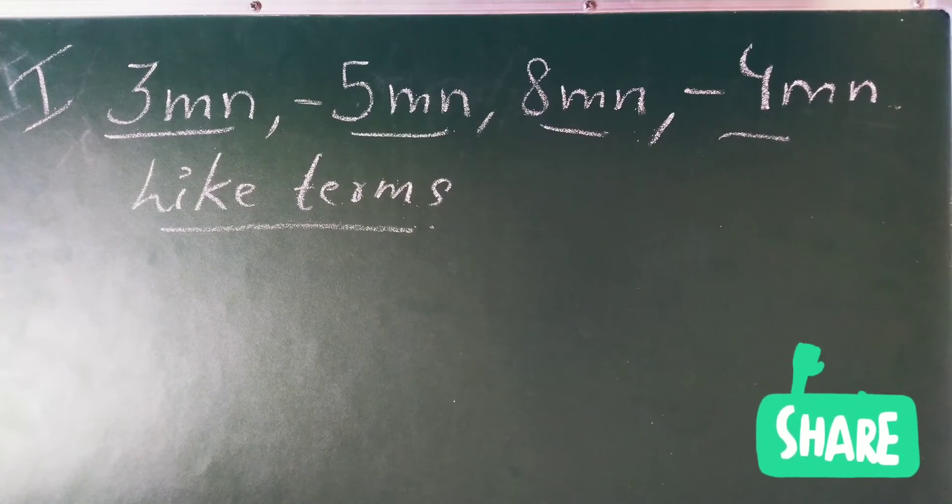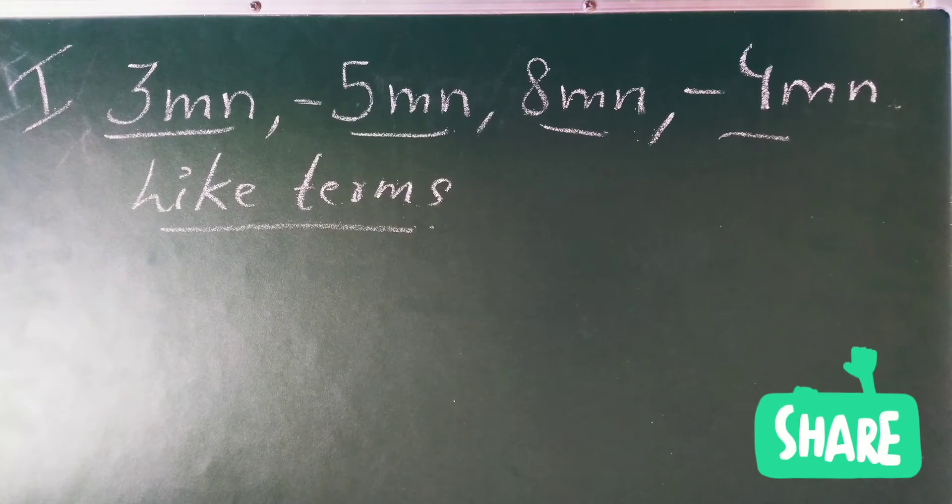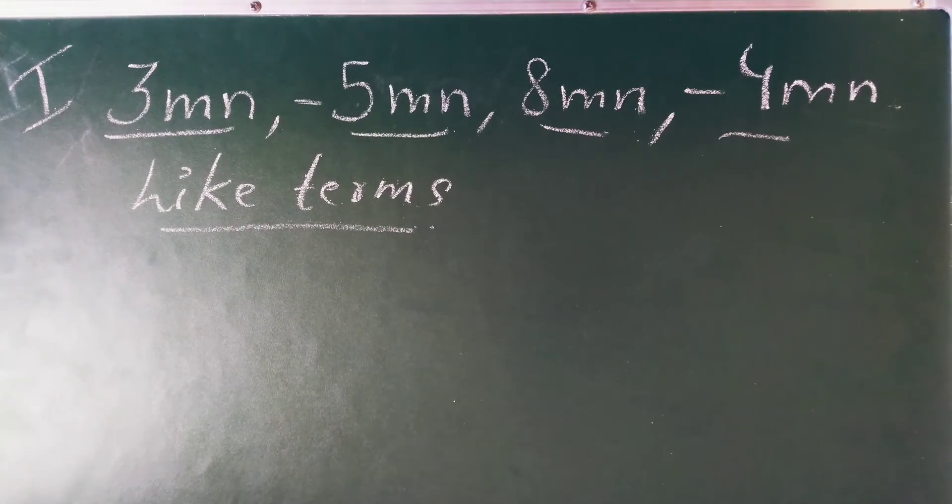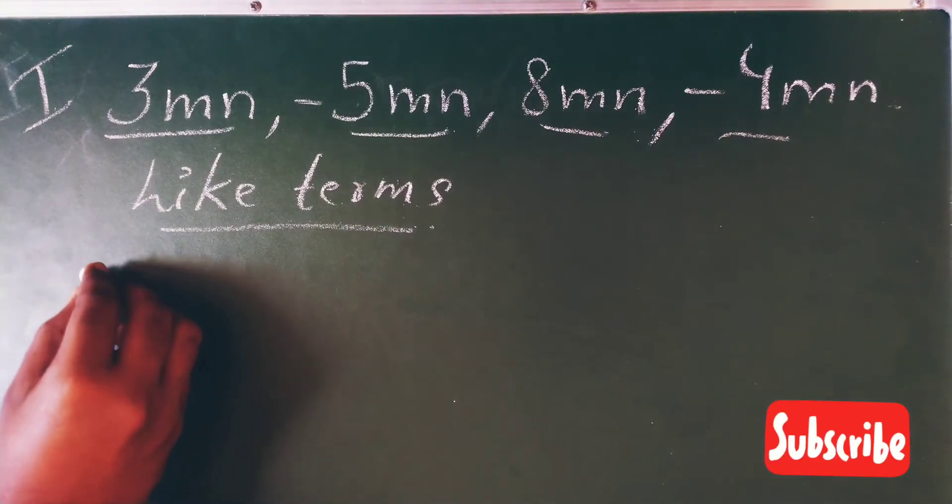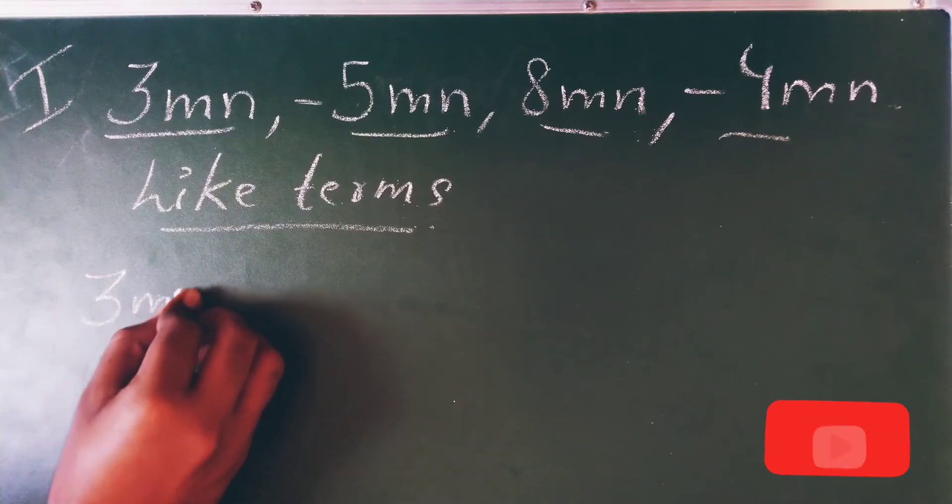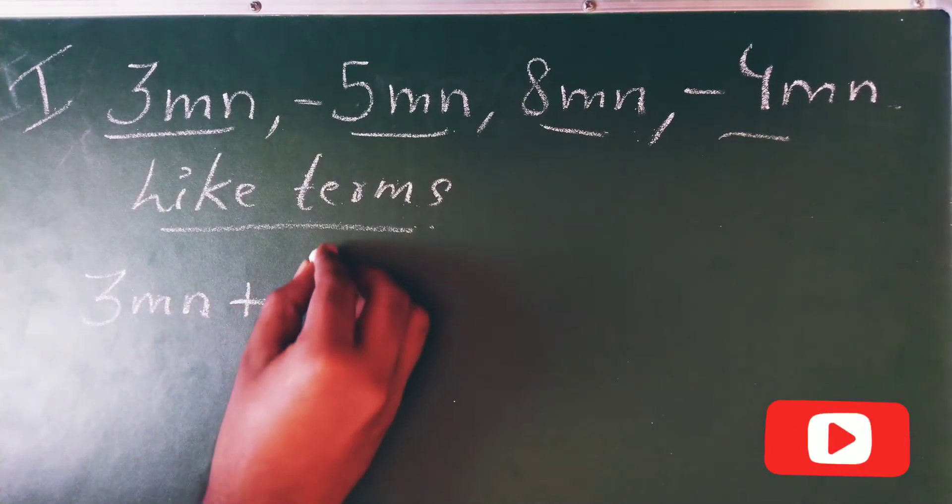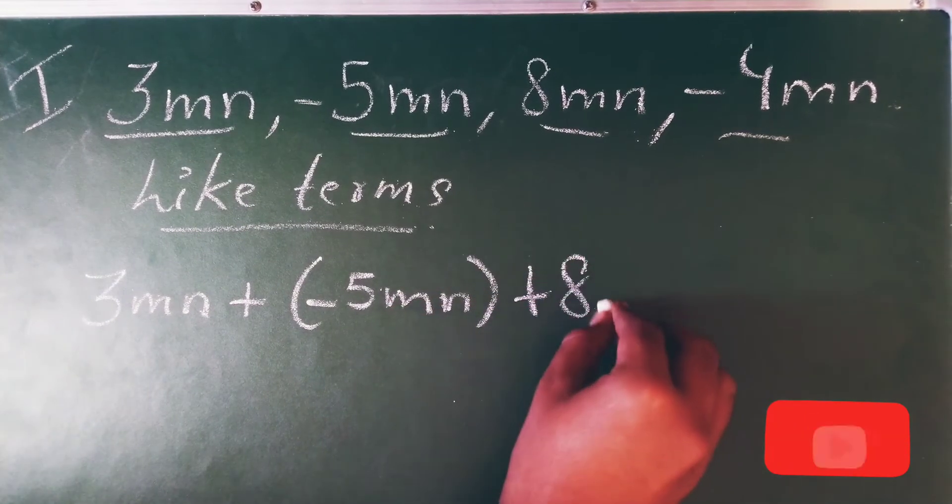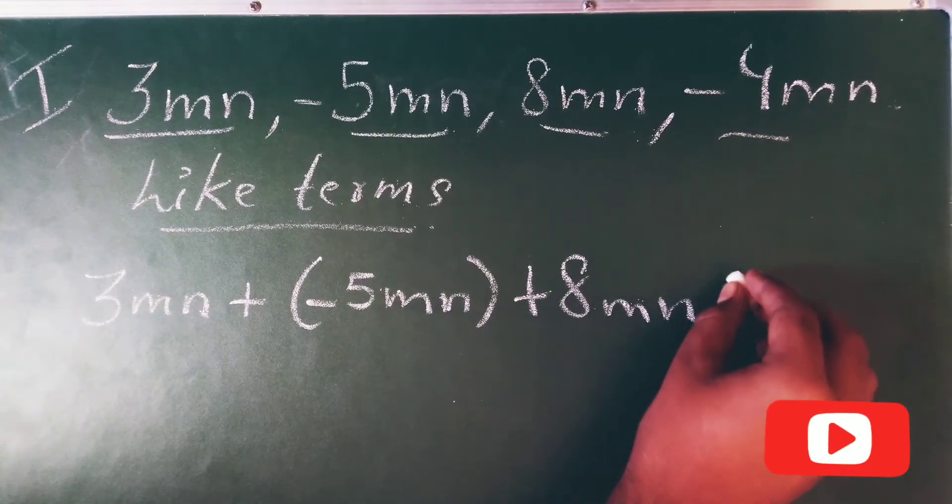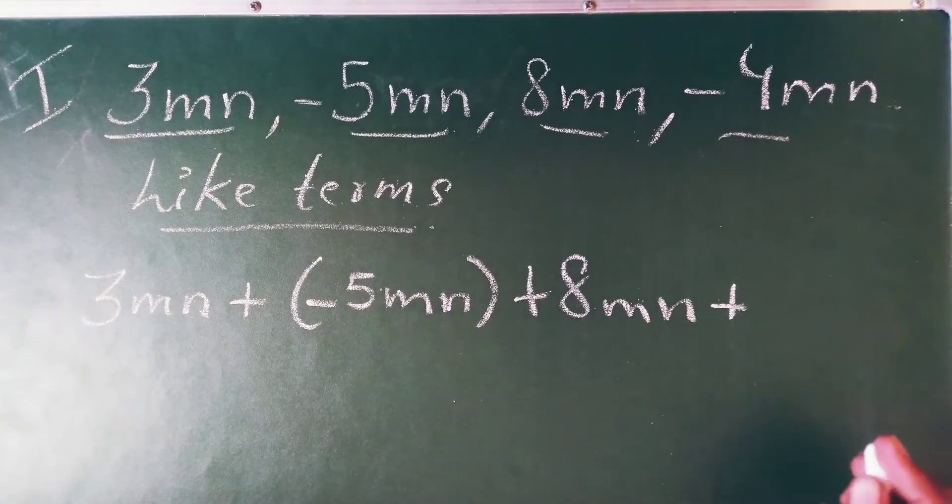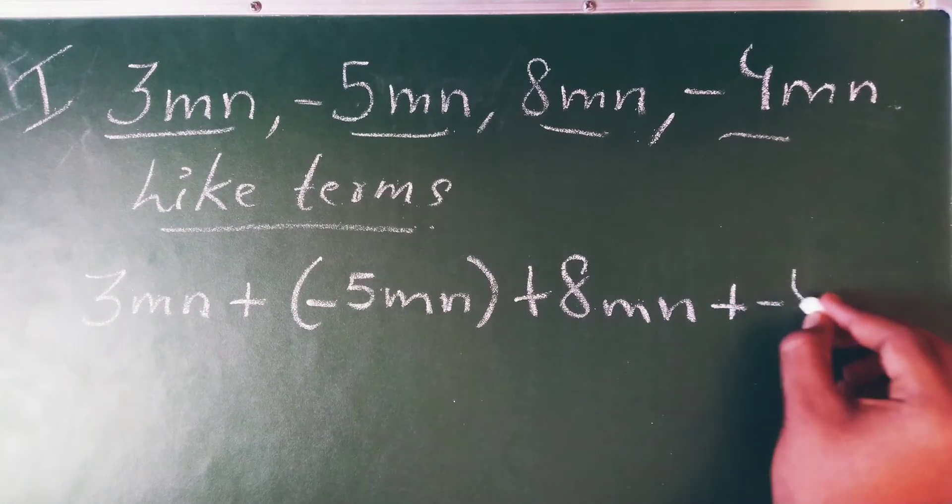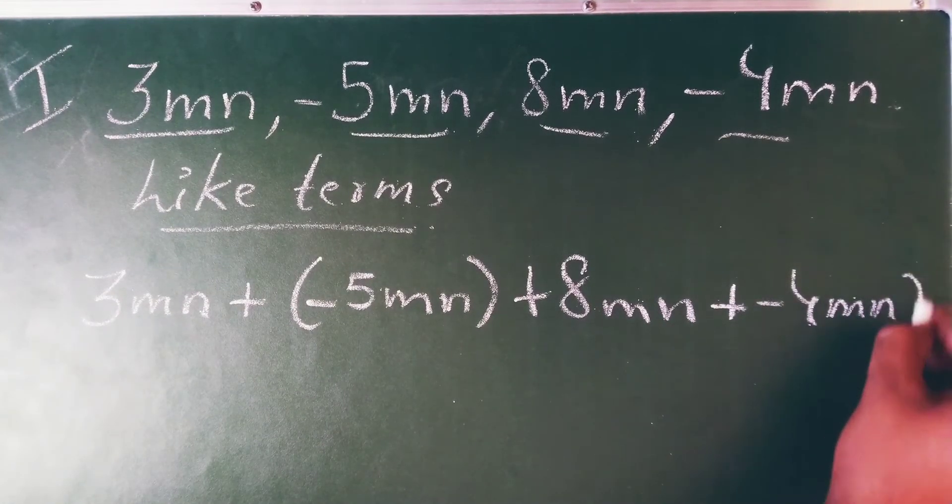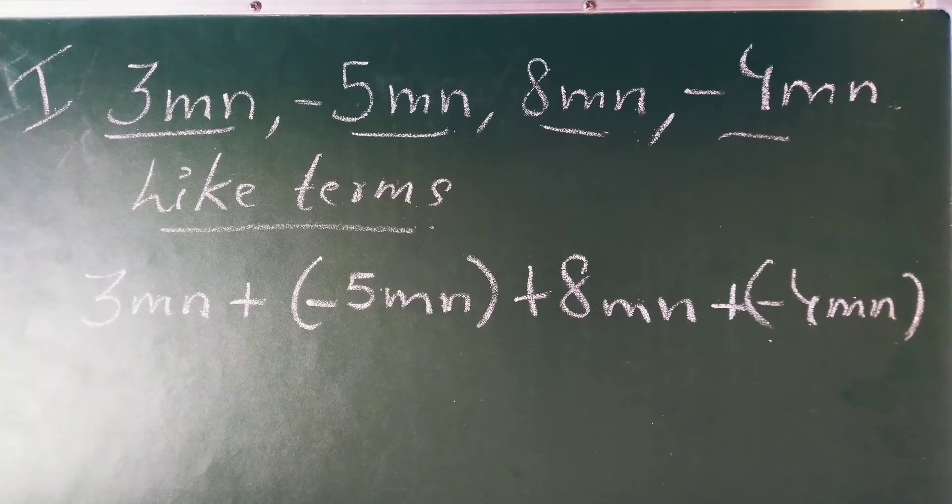Now basically here you have to understand, you have to put plus sign over here. So 3mn plus minus 5mn plus 8mn plus minus 4mn. In place of comma you have to put addition symbol. Now this is the first step over here.